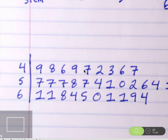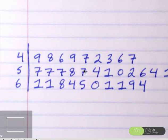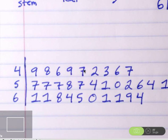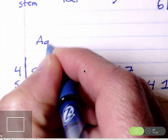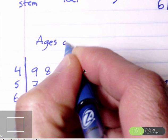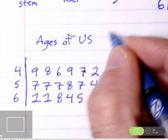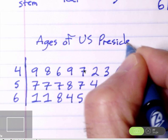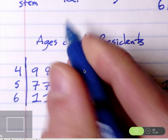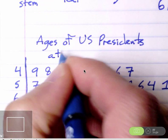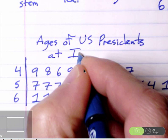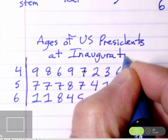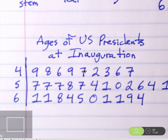So notice we have a key. It's important to include a key. We should also include a title. So these are the ages of the presidents at inauguration. The ages of U.S. presidents at inauguration.